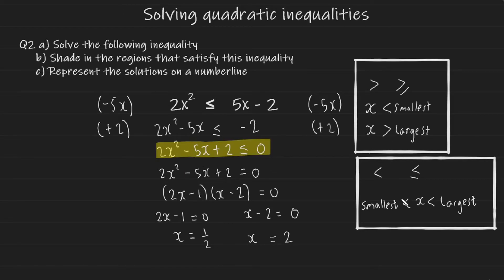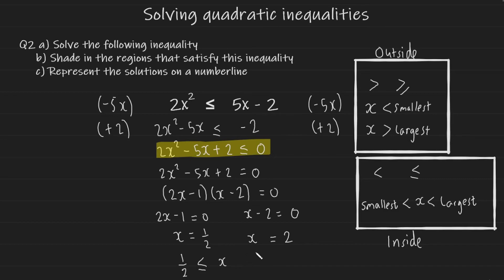Using our two roots, we apply the rules. Our inequality has a less than or equal to symbol, which means the solutions are on the inside. So our smallest root, a half, is less than or equal to x, which is less than or equal to 2. That is how you write the solution for this quadratic inequality.